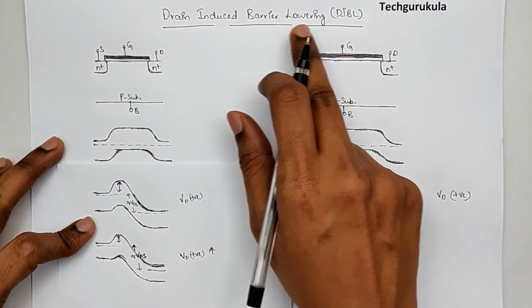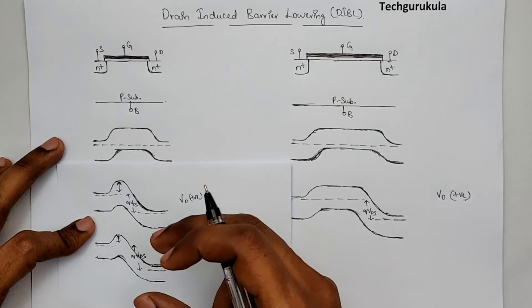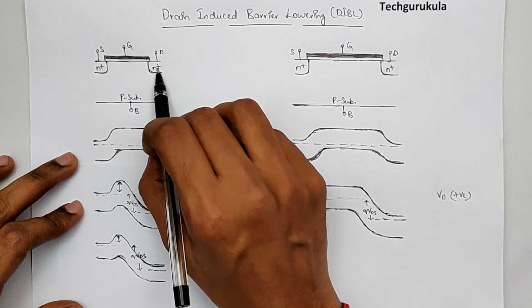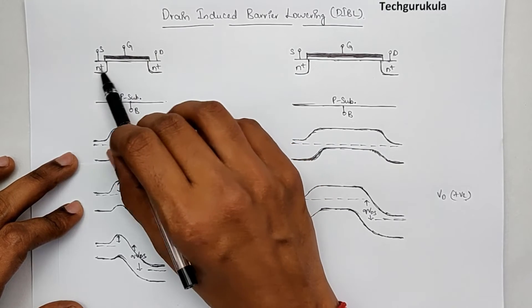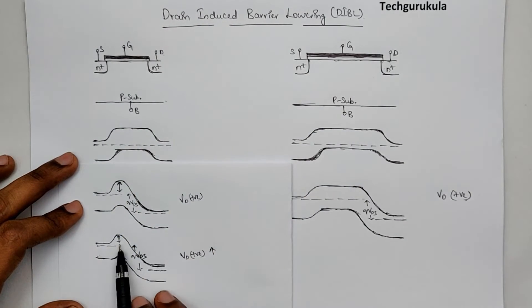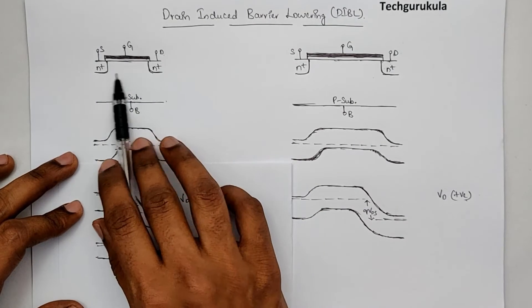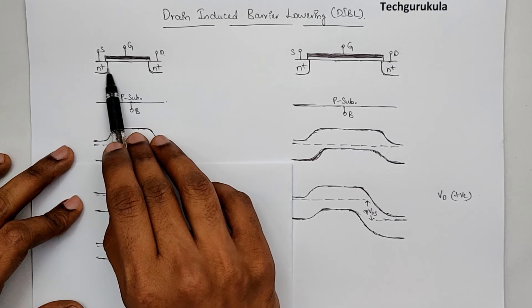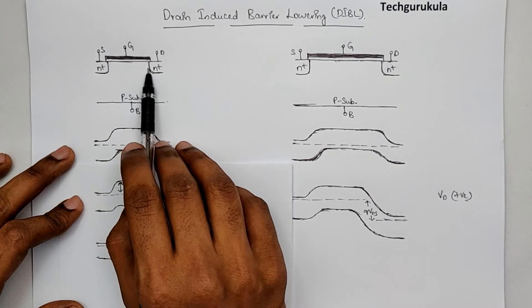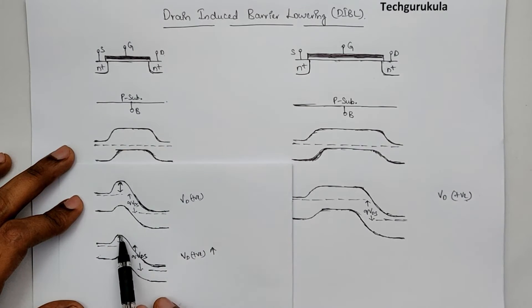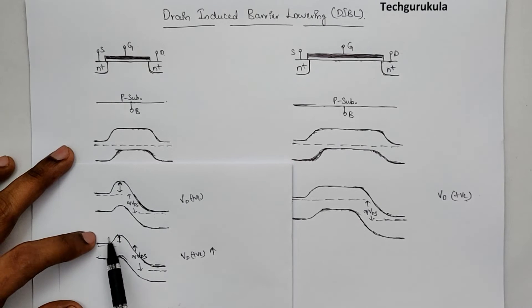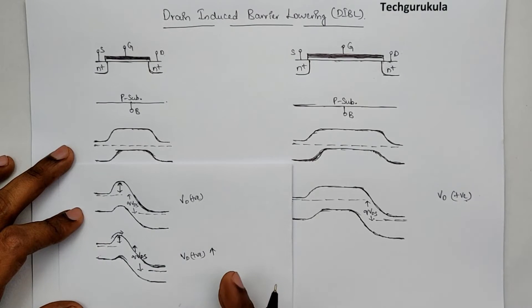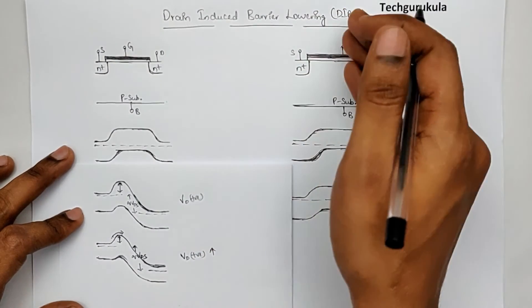That's why it is called drain-induced barrier lowering — the barrier has been lowered. As we discussed, the gate is the one which is supposed to control the barrier between source and drain, so that when potential is applied across drain and source, there would be current flow. In this case, the barrier is in fact controlled by the drain, just because the channel length is small. We define short channel as when the channel length is comparable to the sum of the depletion regions on the source plus the depletion region on the drain. When we apply potential, the barrier reduces, which allows electrons to surmount the barrier and have current flow — meaning in sub-threshold, we would have higher current flowing because of this drain-induced barrier lowering.